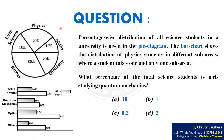Question. The percentage-wise distribution of all science students in a university is given in the pie diagram. The bar chart shows the distribution of physics students in different sub-areas, where a student takes one and only one sub-area. What percentage of total science students are girls studying quantum mechanics?